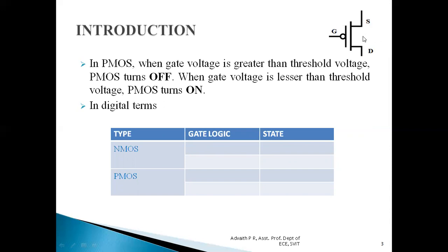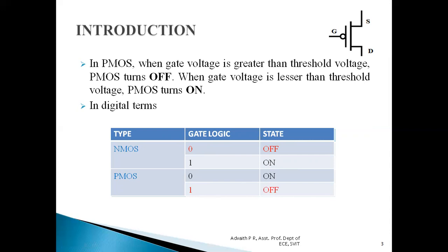In digital terms, for NMOS transistors: when gate logic is 0, the NMOS transistor is OFF; when gate logic is 1, the NMOS transistor is ON. The exact opposite applies to PMOS: when gate logic is 0, PMOS transistor is ON; when gate logic is high, PMOS transistor is OFF. Using this basic knowledge, let us try to design a NAND gate using MOSFETs.